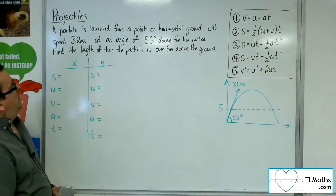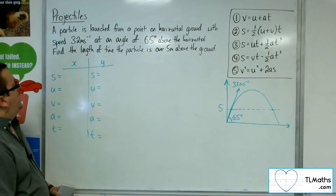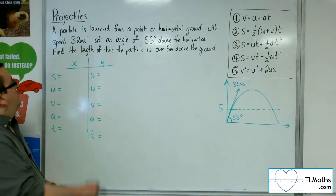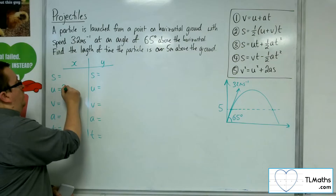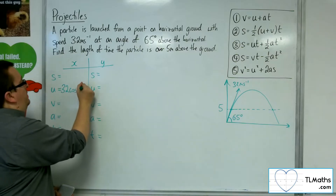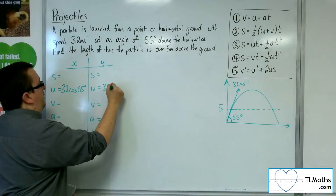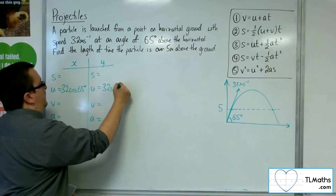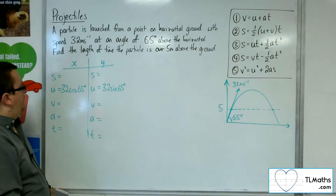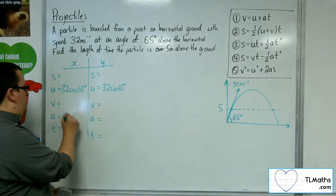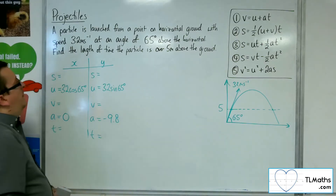The displacement, I don't know. The initial velocity for the horizontal component will be 32 cosine 65, and the vertical component will be 32 sine 65. The velocity, I don't know. The acceleration is 0 for the horizontal and minus 9.8 for the vertical.